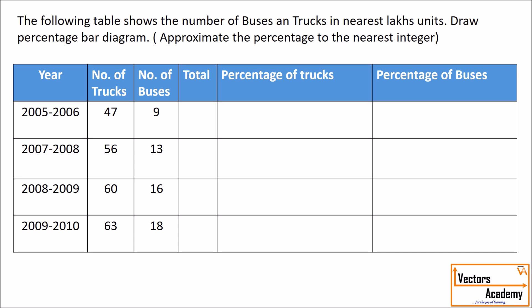The total column can be directly found out by adding the number of trucks and the buses. For the year 2005 and 2006, 47 plus 9 will give you 56. Similarly for the other three years, it's 69, 76, and 81.